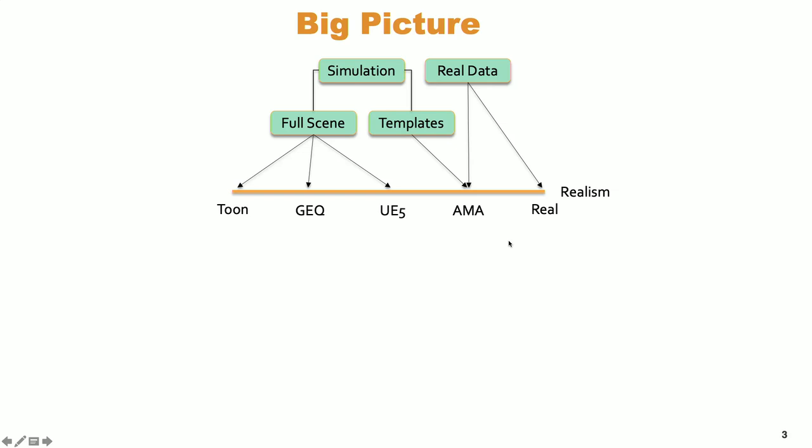We have another great talk on UE5 coming up, so check that out if you're interested. And then AMA — I forget the actual abbreviation — but it's dropping a scan target into a real background, so that's about as close as you can get to real data without it being fully real. Then we have our real data with boxes drawn around the target, all the way at the real end of our reality spectrum.